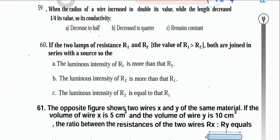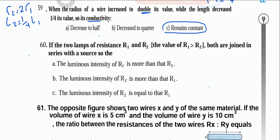When the radius of a wire is increased to double (r2 = 2r1) while the length decreases to quarter (L2 = ¼L1): conductivity is not affected — it only changes with temperature and material type.